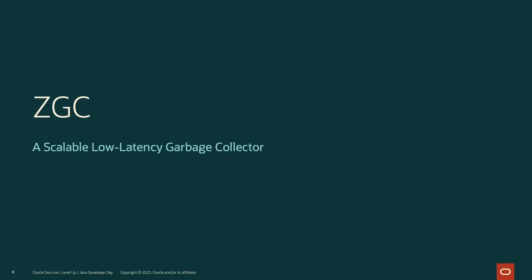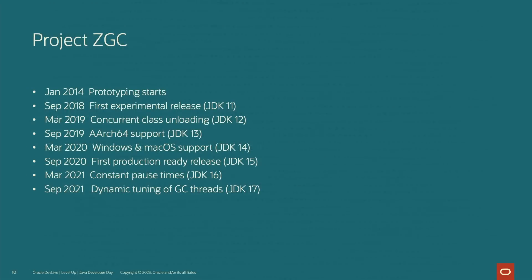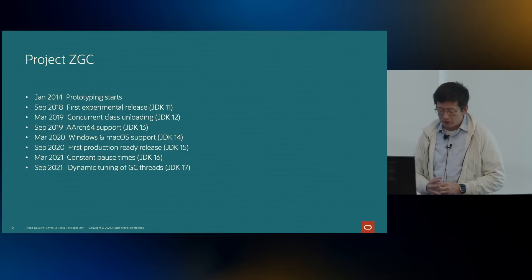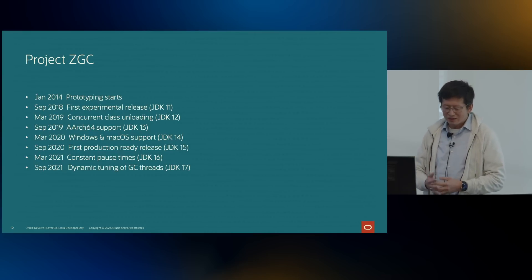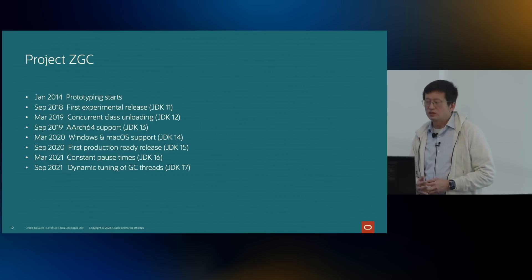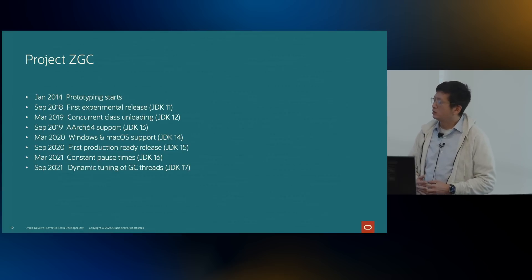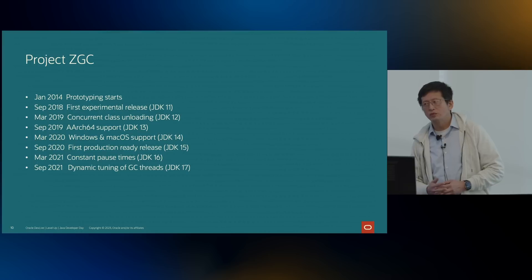So now let's dig a little deeper specifically into ZGC. Let's start by taking a look at the development timeline for ZGC thus far. Exploratory investigation into what would eventually become ZGC first began back in 2014. Four and a half years later, it was released as an experimental feature in JDK 11. And since then, there have been improvements and significant features added in virtually every six-month release of the JDK.